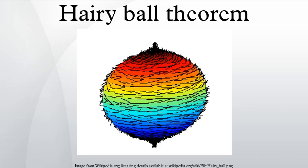It can also be written as every smooth vector field on a sphere has a singular point. It was first proved in 1912 by Brouwer.